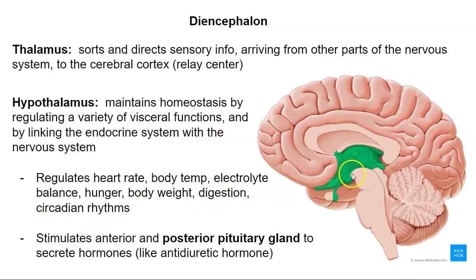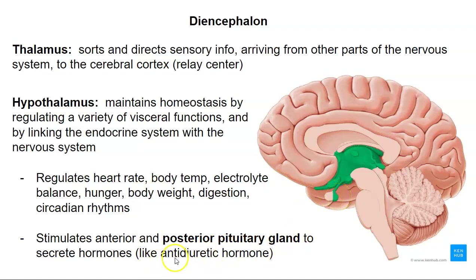The hypothalamus also stimulates the anterior and posterior pituitary glands. The pituitary gland then releases hormones — for example, anti-diuretic hormone is released from the posterior pituitary gland, which helps you retain water by reducing urination.